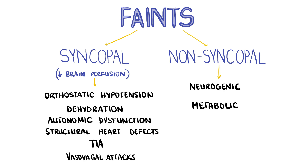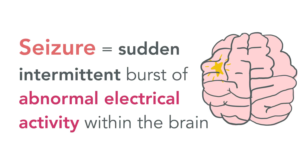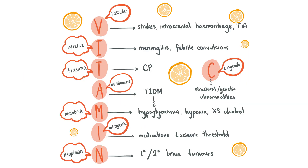Now let's move on to fits. A seizure is a sudden intermittent burst of abnormal electrical activity within the brain. Seizures tend to be associated with epilepsy but in fact they can be caused by many other things such as stroke, intracranial hemorrhage, medications lowering the seizure threshold, hypoglycemia, hypoxia, meningitis, a brain neoplasm or even a structural abnormality.